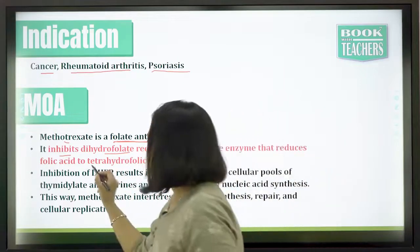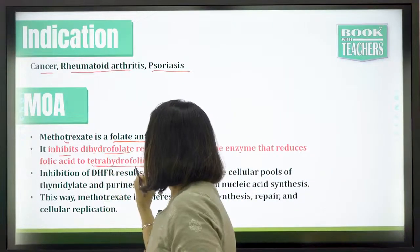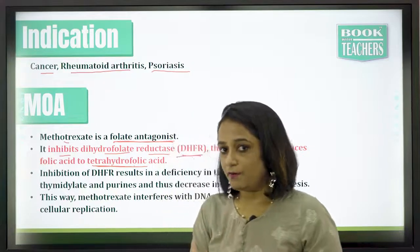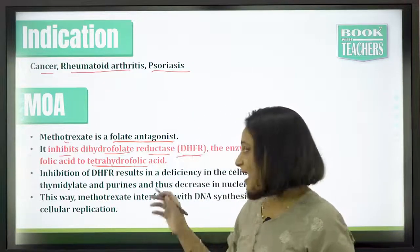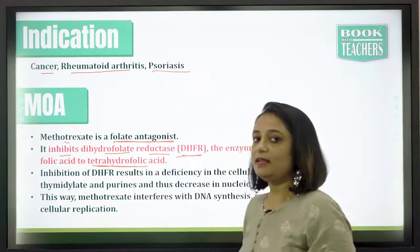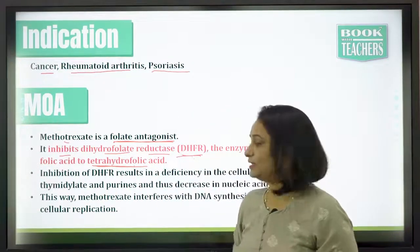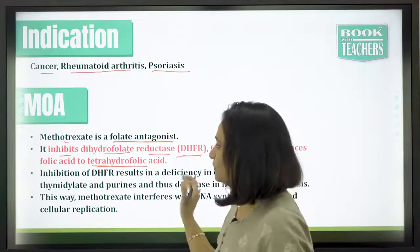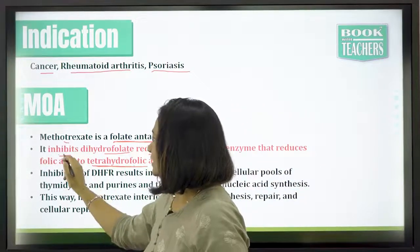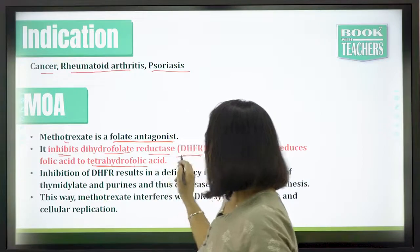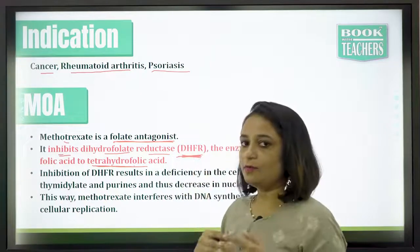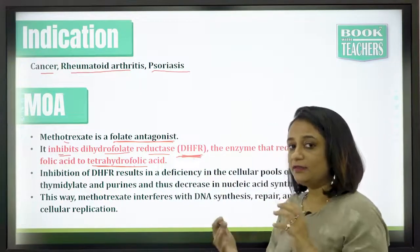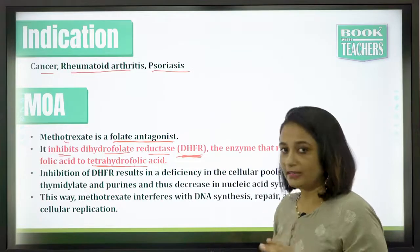Tetrahydrofolic acid is the purest, active form of folic acid and is used for cell replication. What methotrexate does is inhibit the DHFR enzyme, so folic acid is not converted to its active state.